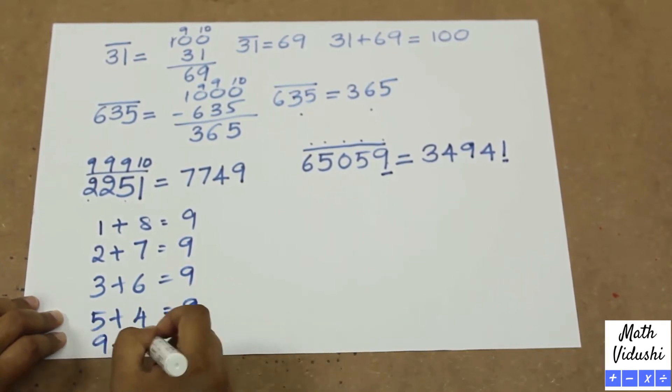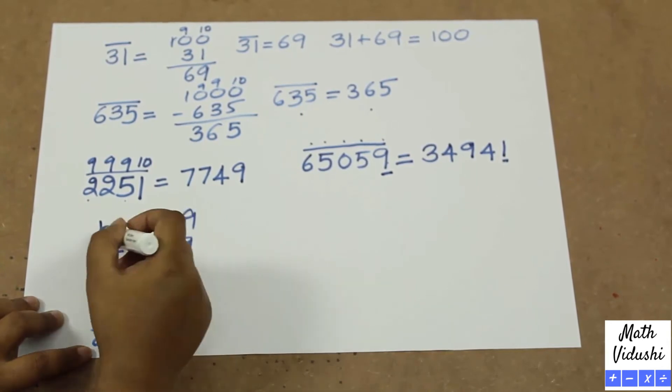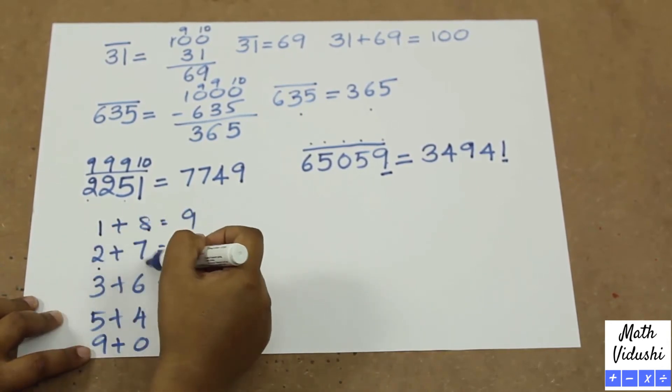Complement of 8 would be 1. The complement of 2 would be 7. 7 would be 2. Complement of 3 would be 6 and 6 would be 3.